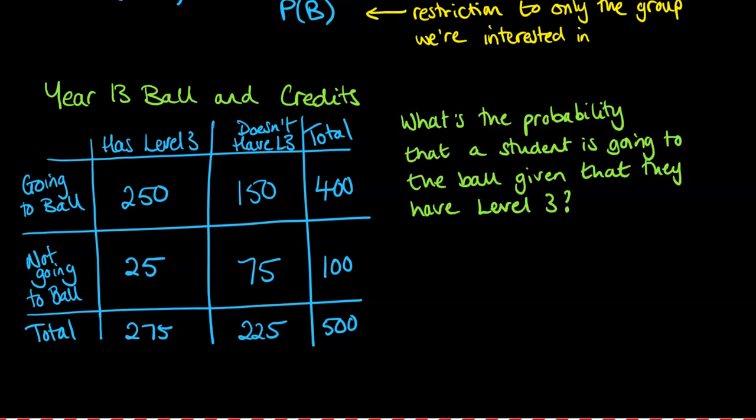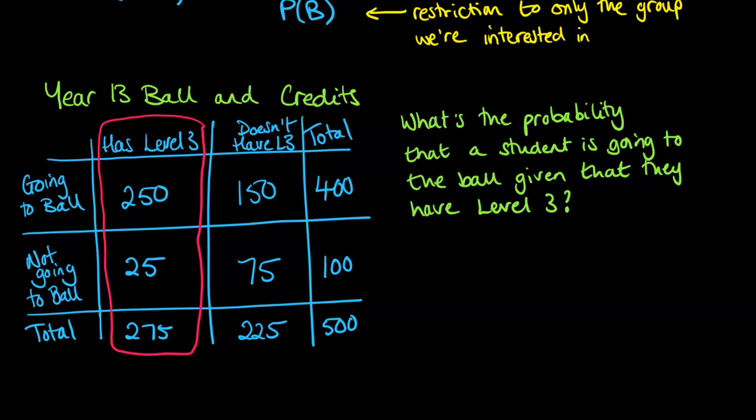We've got that summarized in this table. The first question is: what's the probability that a student is going to the ball given that they have level 3? I'm going to do this intuitively by looking at the students that have level 3. We're restricting it only to look at this group of students here, and we've got a total of 275. Now, of them, how many are going to the ball? We've got 250 here. So it'll be 250 out of 275.